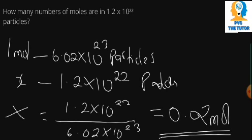That's how we use Avogadro's number to find the number of moles and the number of particles. Thank you so much. Don't forget to subscribe. In the next video we'll be looking at how you can find the number of moles from the standard formula — the relationship between number of moles and mass. Thank you so much, PVST Tutor. Share and don't forget to subscribe.